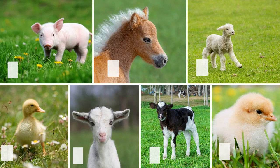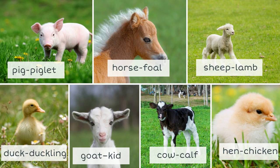Baby animals are called in a peculiar way. A young pig is a piglet, a young horse is a foal, a young sheep is a lamb, a duck — a duckling, a goat — a kid, a cow — a calf, a hen — a chicken.